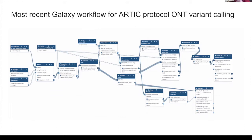We generate a consensus and call variants on these alignments using Medaka. The Medaka consensus tool generates an HDF5 file that has probabilities of different bases at each position, and then the variant calling tool uses the neural net to do the variant calling. From there, we filter these variants using low-frequency filtering, then annotate these variants. In addition, we're doing QC outputs using MultiQC, samtools stats, and qualimap QC.